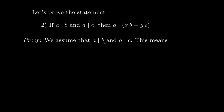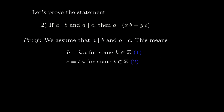Using the definition: a divides b means b is an integer multiple of a, so we can write b equals k times a for some integer k — call that statement 1. Similarly, a divides c means c is a multiple of a, but not necessarily the same multiple as b. So c equals t times a for some integer t — call that statement 2.